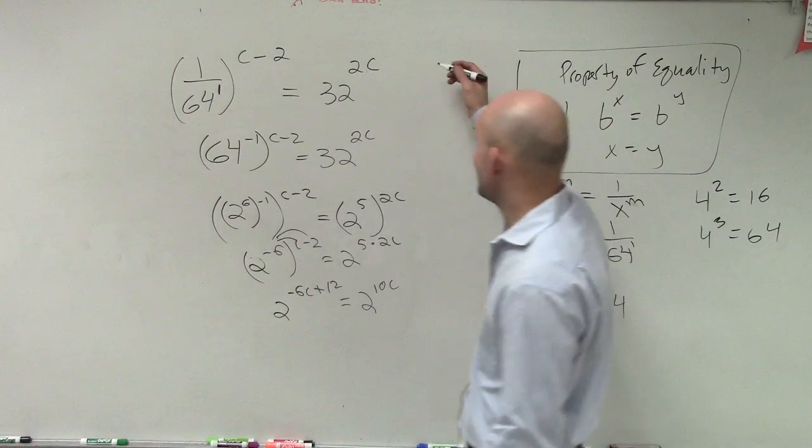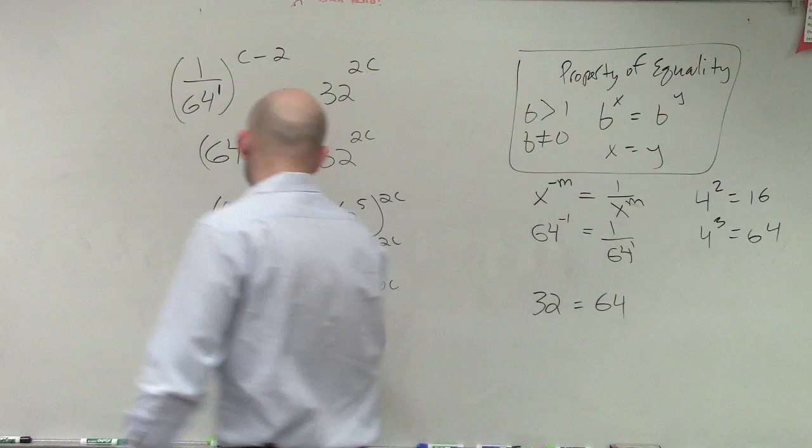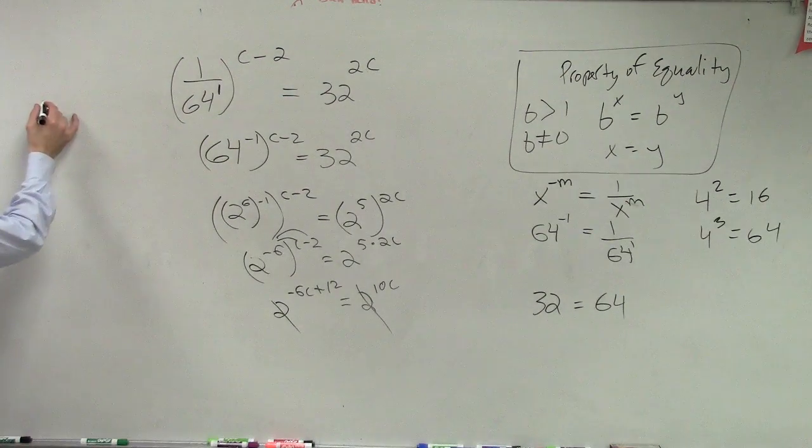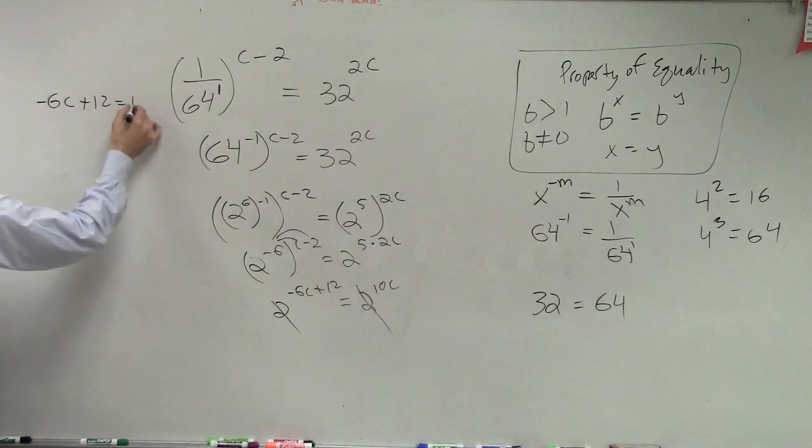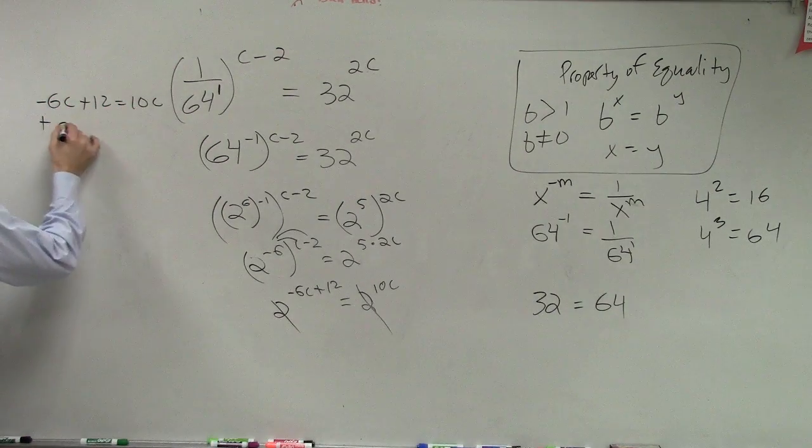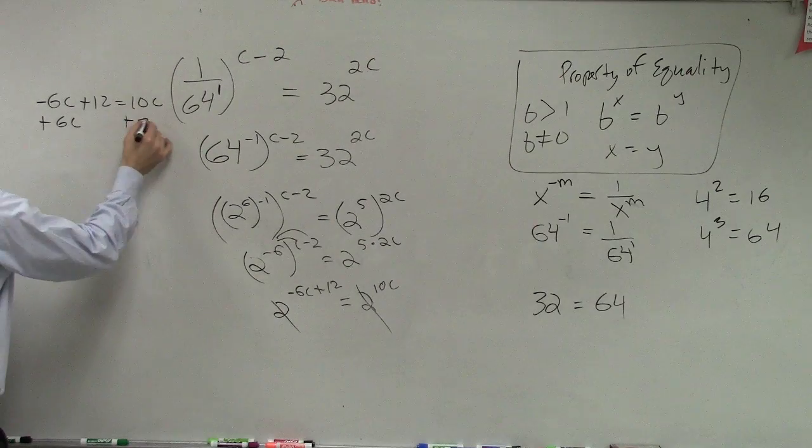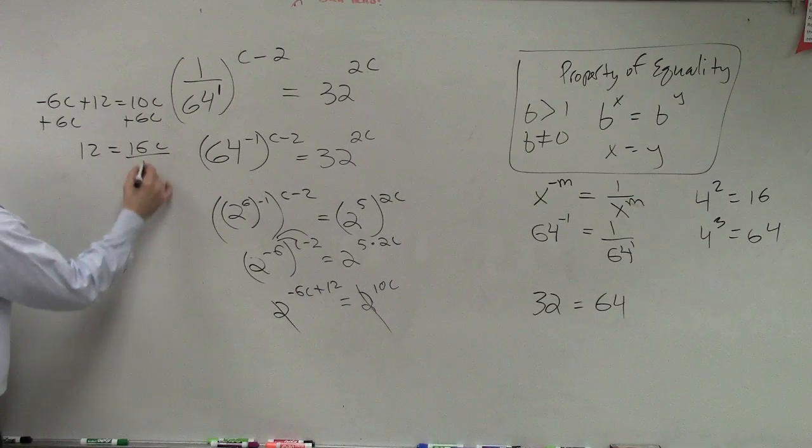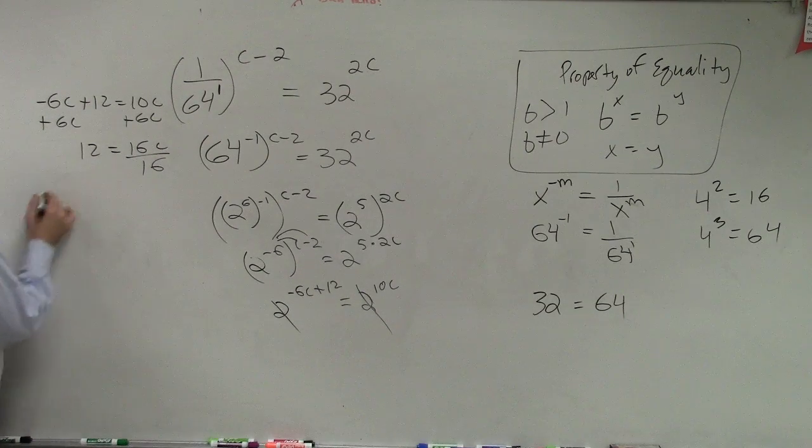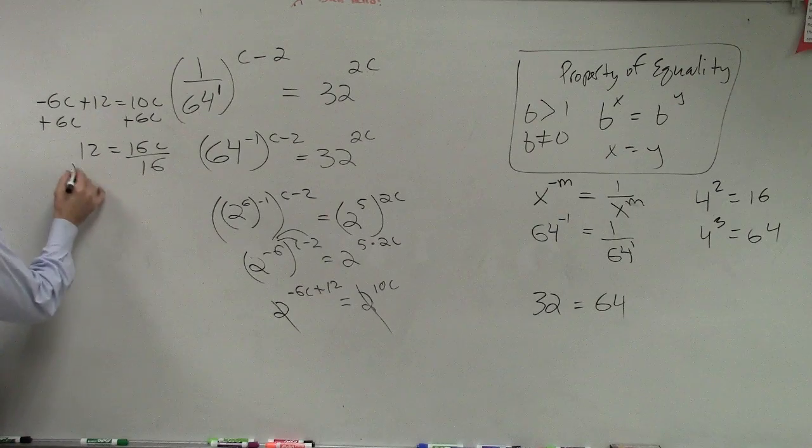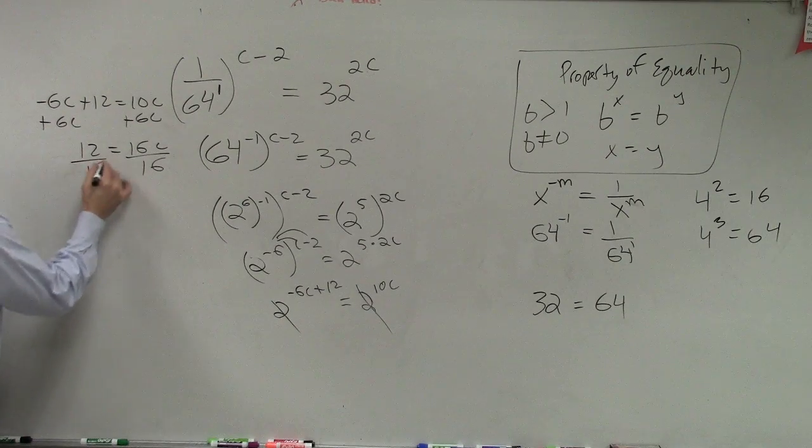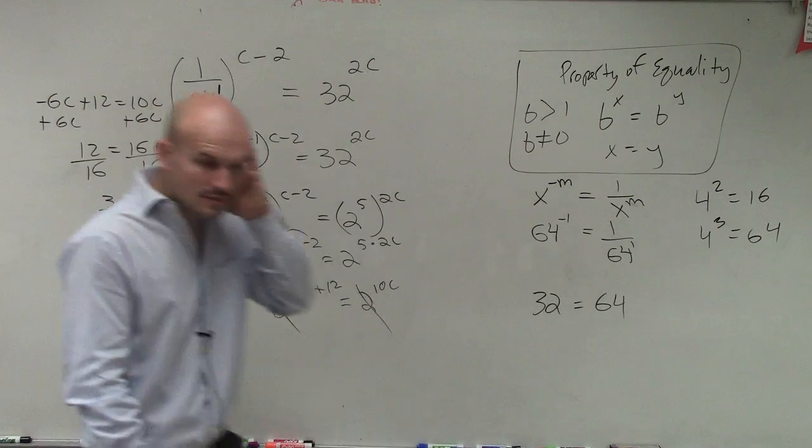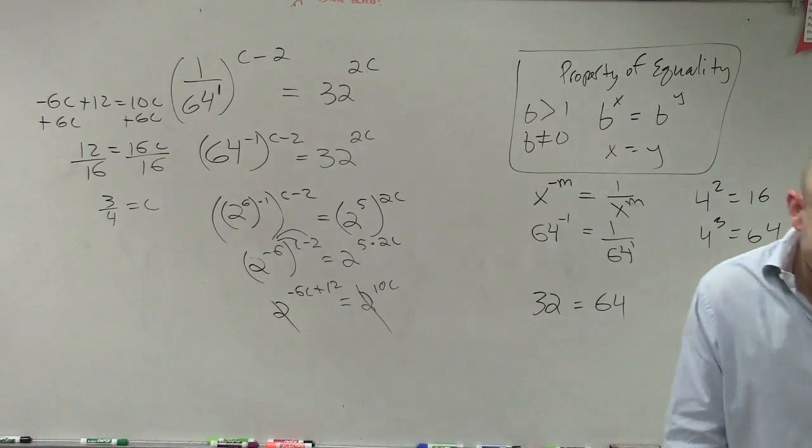Then now we have - so now these cancel out, or we don't need them anymore. And we're left with negative 6c plus 12 equals 10c. So therefore c in this case is going to equal 3 fourths.